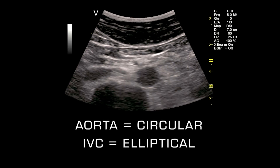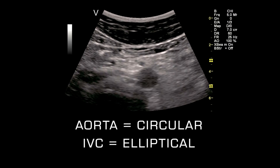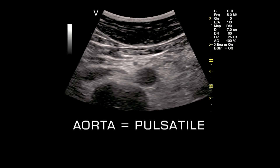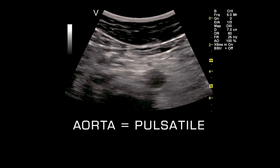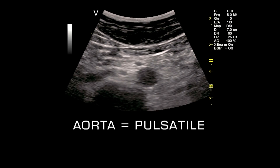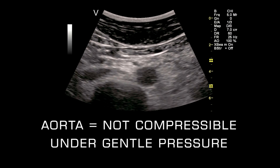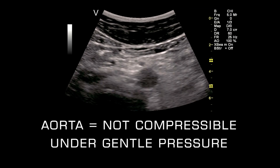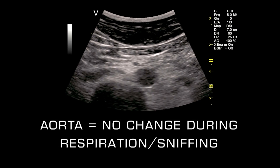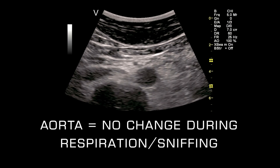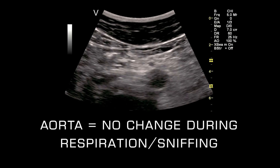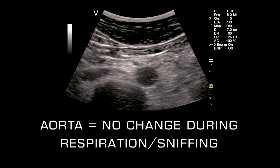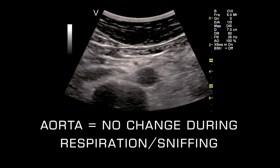The aorta appears circular in cross-section, while the IVC may appear elliptical or teardrop-shaped. The aorta is pulsatile, while the IVC is not as pulsatile. The aorta is not compressible under gentle pressure, but the IVC is. The abdominal aorta shows no change in size with respiration or sniffing, whereas the normal IVC shows up to 50% or more change in diameter with respiration or sniffing.